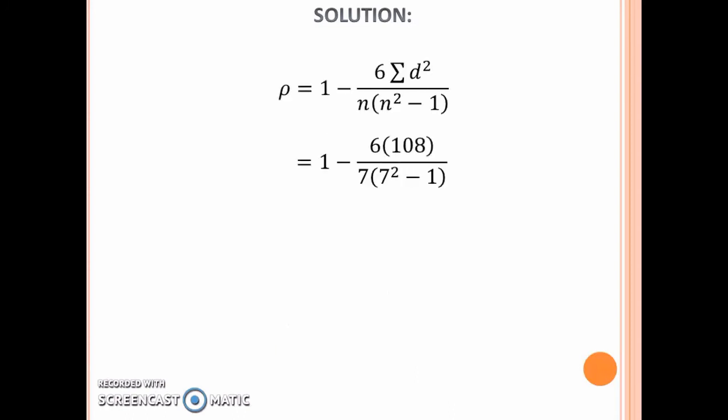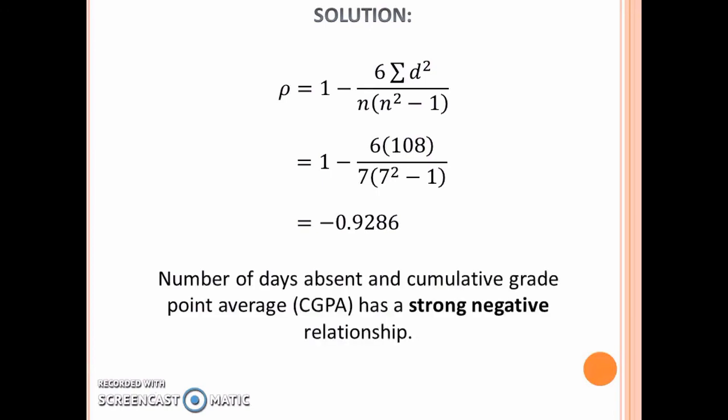Substitute the value of the summation of d squared and the value of n into the formula of rho and calculate the value of rho. Since the rho value is close to negative 1, it can be said that the number of days absent and cumulative grade point average has a strong negative relationship.